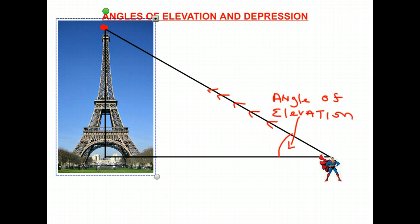Let's write that down. Remember that 'elevate' means to go up, and so Superman is looking up to the top of the Eiffel Tower. This is why we're calling this an angle of elevation — it's simply the angle formed between the line of sight and the horizontal line, where the line of sight is above the horizontal line.